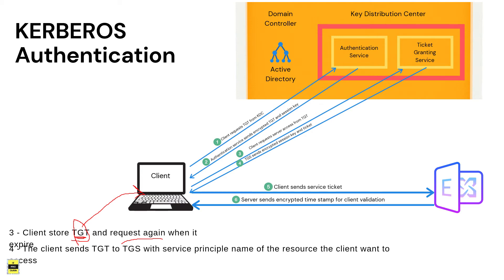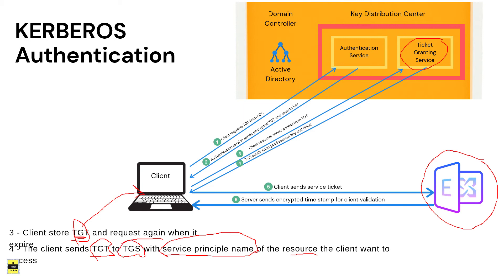In the third step, the client wants to authenticate in order to access a service. The client sends the TGT it received in the previous step to the Ticket Granting Service inside the KDC, along with the Service Principal Name of the resource it wants to access. For example, if the client wants to access Microsoft Exchange Server, it sends its current TGT plus the Service Principal Name of the Exchange server. The KDC now knows the user has a valid TGT and the specific service they want to access, so the TGS sends back a valid session key for that service.